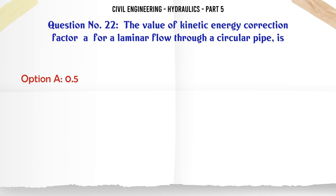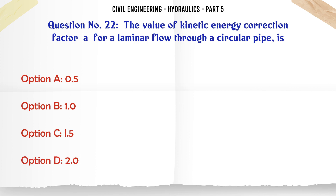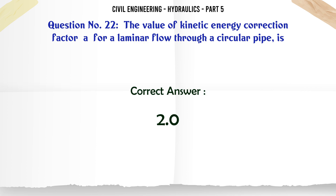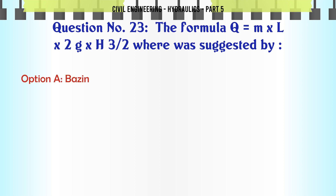The value of kinetic energy correction factor α for a laminar flow through a circular pipe is: A. 0.5, B. 1.0, C. 1.5, D. 2.0. The correct answer is 2.0.